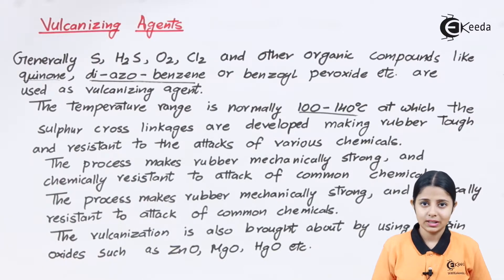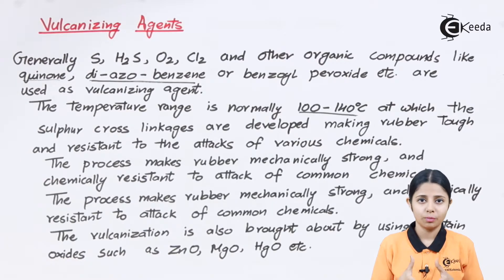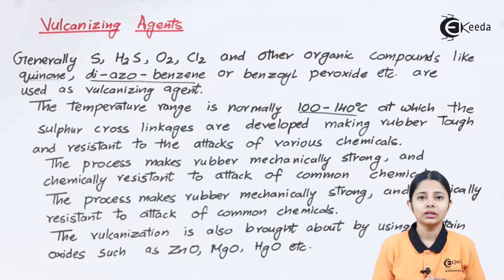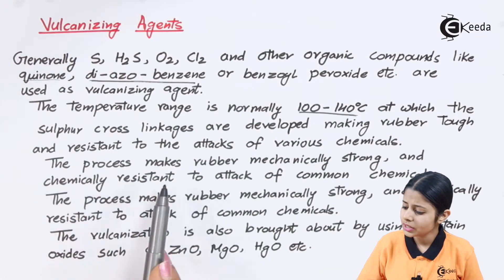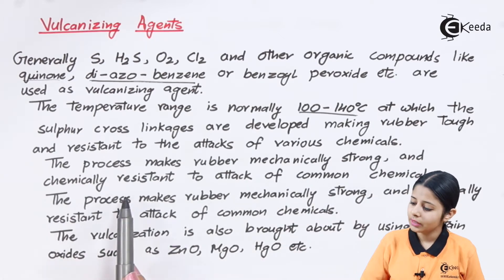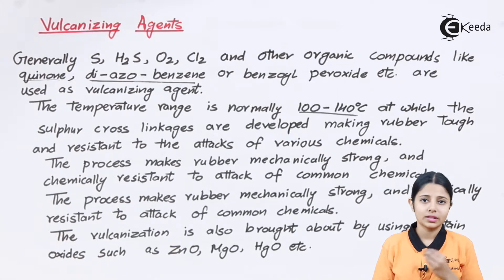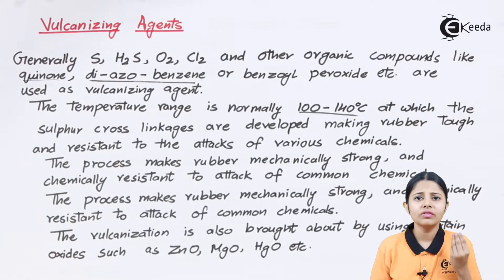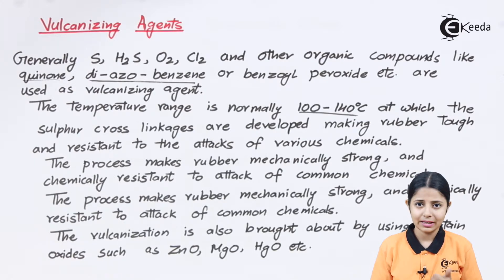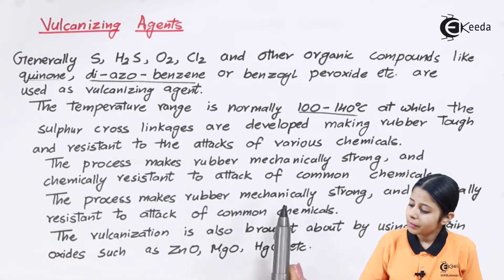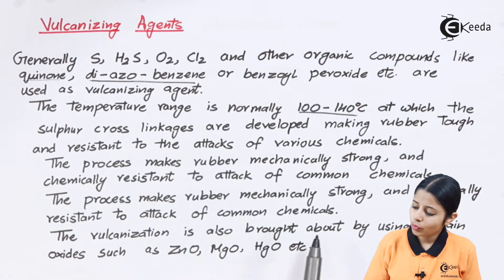Cross-linkage is straightforward — you add sulfur to rubber and heat it at around 100 to 140 degrees Celsius, and the sulfur gets imbibed within it, making cross-linkages between the two linear structures. The process makes rubber mechanically strong and chemically resistant to attack by common chemicals. Natural rubber is not resistant to common chemicals, but after vulcanization it gains both mechanical strength and chemical resistance.